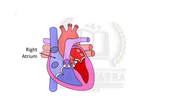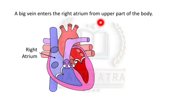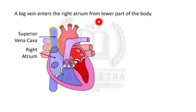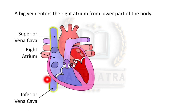A big vein enters the right atrium from the upper part of the body — this is called the superior vena cava. Another big vein enters the right atrium from the lower part of the body — this is called the inferior vena cava. So these are the two venae cavae: the superior vena cava and the inferior vena cava.